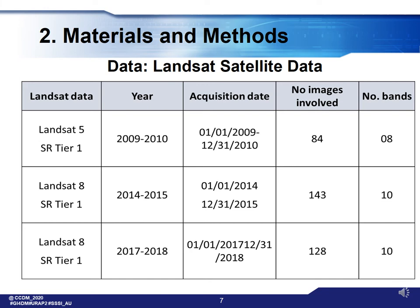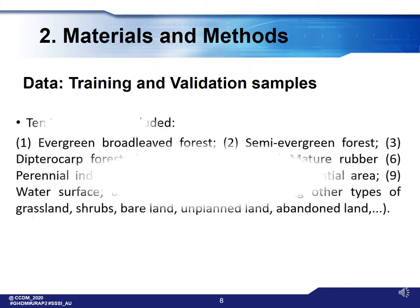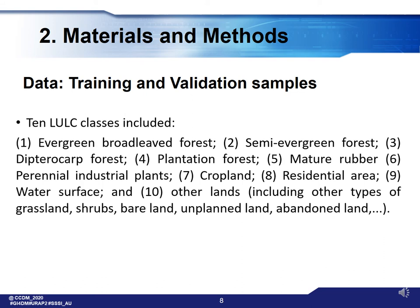For the data, we used Landsat 5 and 8 imagery from 2009, 2015, and 2018. Based on the quality of the images and our purposes, ten land use land cover classes were discriminated, including evergreen broadleaf forest, semi-evergreen forest, dipterocarp forest, plantation forest, mature rubber, perennial industrial plants, cropland, residential area, water surface, and other lands including grassland, shrubs, bareland, unplanned land, and abandoned land.